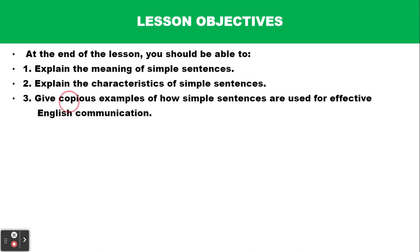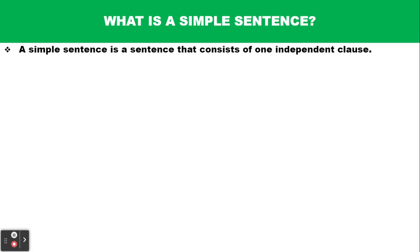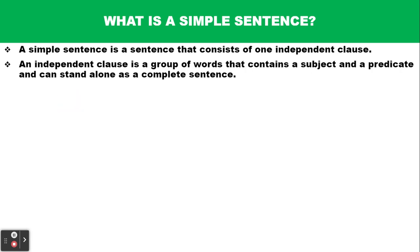Let's begin with the basic question: what is a simple sentence? A simple sentence is a sentence that consists of one independent clause. You may ask, what is an independent clause? An independent clause is a group of words that contains a subject and a predicate, and can stand alone as a complete sentence.